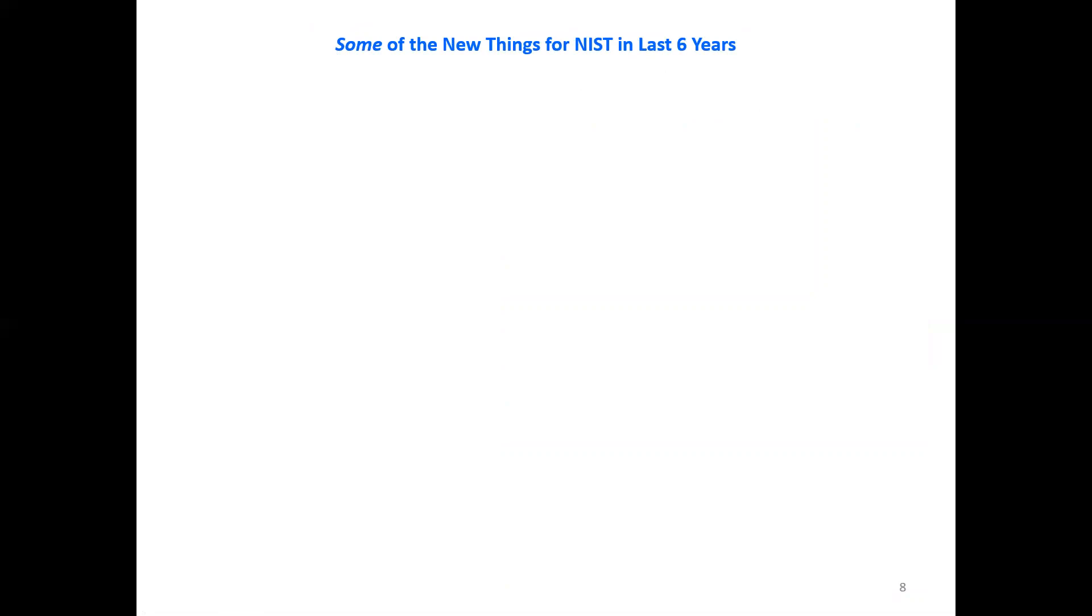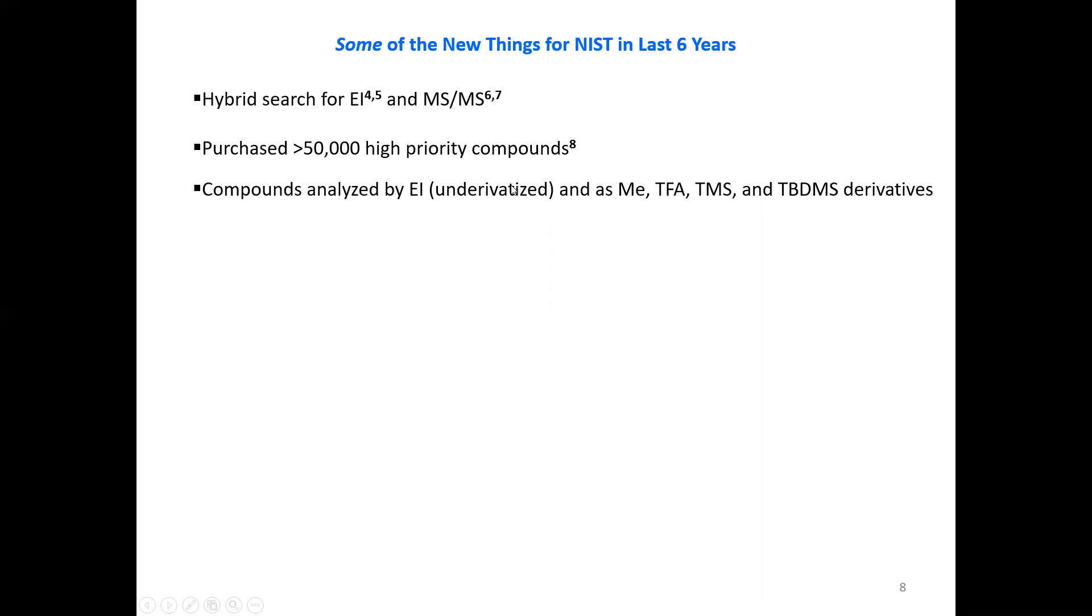So what are some of the new things for the NIST in the last six years? They've added things continually every year. I'll just list some of the ones that I think are most important. The hybrid search for EI and MSMS, and we'll talk about that in detail. They purchase a lot of high-priority compounds and run them in their laboratories. The compounds are analyzed by EI, both underivitized and as their methyl, TFA, TMS, and TBDMS derivatives.